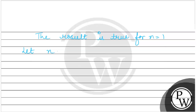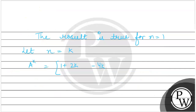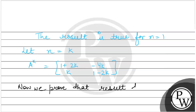Now let n = K. Then A^K = [1+2K, -4K; K, 1-2K]. We assume this to be true, and now we have to prove that the result is true for n = K+1. We will put n = K+1.